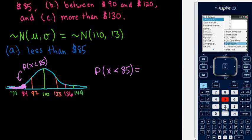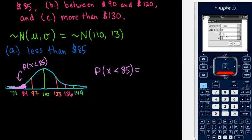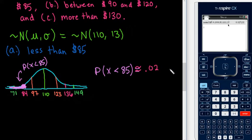We are looking for option 2 — all values up to and including close to 85. When you open this screen, the lower bound defaults to negative 9E99, which is essentially negative infinity. Our upper bound is 85, since we're looking for less than 85. The mean is 110, and we change the standard deviation from the default of 1 to 13. After entering these values and hitting enter, the calculator tells us the area is approximately 0.02723.